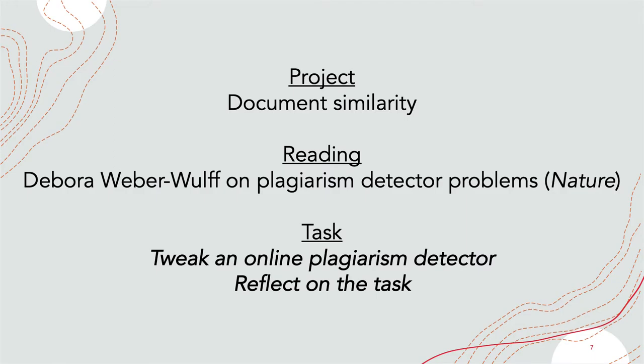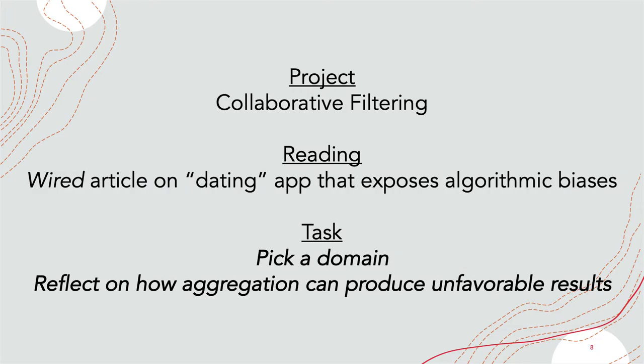Here are three examples. On a project about document similarity, we asked students to read a Nature paper on the problems with plagiarism detection. They were then asked to use an online detector, tweaking inputs to see ways in which the detector does and doesn't work, and then reflect on what they saw. On a project about collaborative filtering, we gave them a Wired article about a mock dating app for monsters, designed to expose algorithmic biases in a playful and impersonal setting. Students were then asked to think about how similar data aggregation can create problems in other domains.